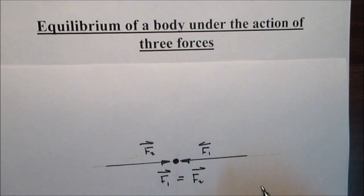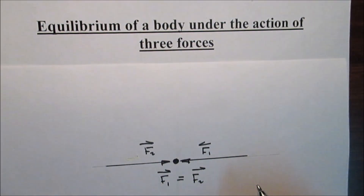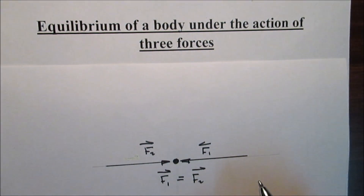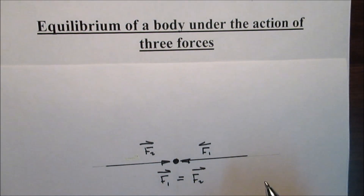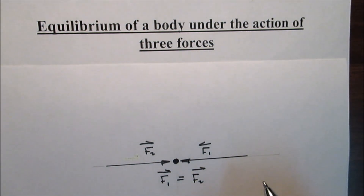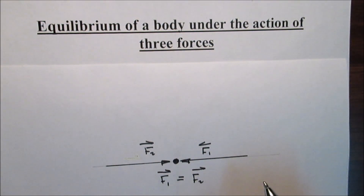Now we're going to take the equilibrium of a body under the action of three forces. A body is in equilibrium means that all the forces acting on the body cancel each other. So equilibrium is the state of balance between opposing forces.